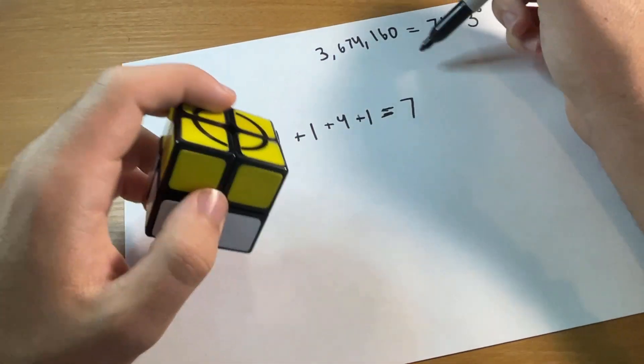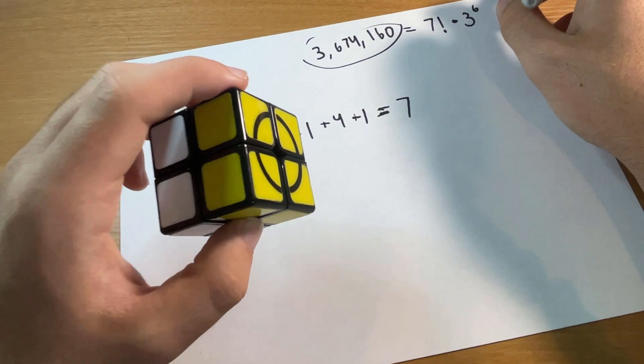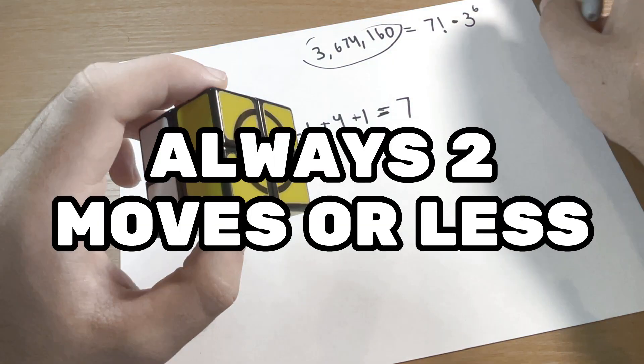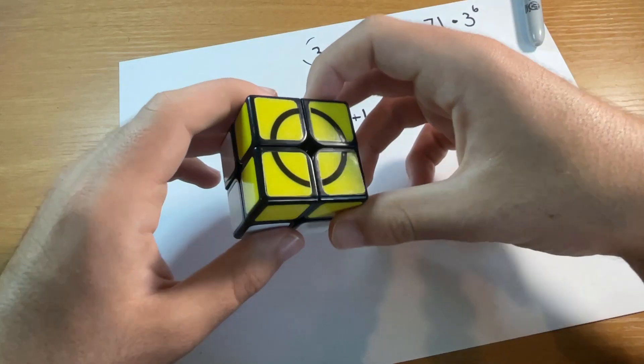I forgot to mention this, but on level one you can always solve this cube in two moves or less. Now I tried really hard to find out the amount of permutations if you include the orientation of the pieces. I just couldn't figure it out though.